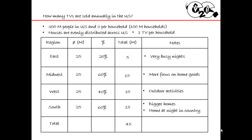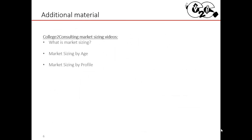That means there are 45 million TVs sold annually in the U.S. I'm going to circle this number and put it in my interviewer's face to show them I got this. There's no math on this sheet of paper. It's the same thing as doing a breakdown by age or profile, except you make one upfront assumption: 300 million people divided by three people per household equals 100 million households. For additional material, I also have videos on what is market sizing, an introduction to market sizing by age, and how to do market sizing by profile. Thank you very much.